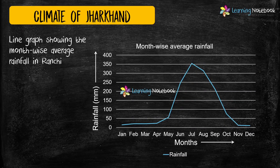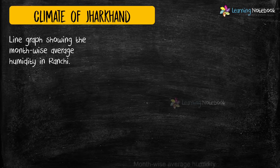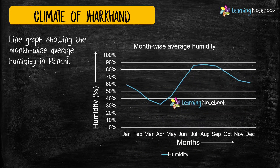Then you can again take help of a line graph to show month-wise average rainfall in Ranchi as shown here. You can also represent month-wise average rainfall in Ranchi using a line graph.